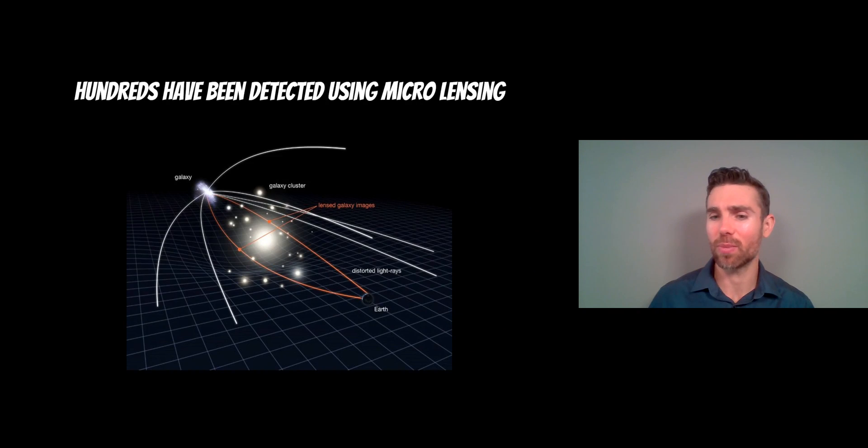But how do we actually detect them? So we know there's been a few hundred detected that are rogue planets without a star. And we typically detect them using microlensing. So microlensing is a similar effect to gravitational lensing. The image here is showing a galaxy cluster, which obviously has a very large amount of mass. So as light passes over it, through it from a distant galaxy, the light is bent around. We can then measure or look at that distorted light and we can work out information about the background galaxy and the galaxy cluster.